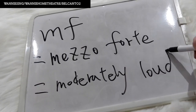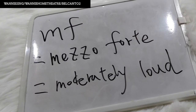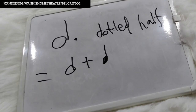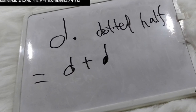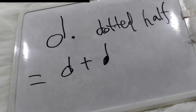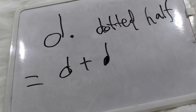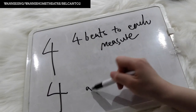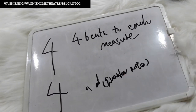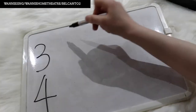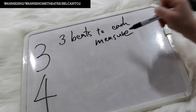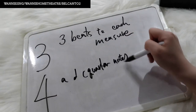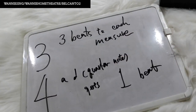The new music dynamic we have learned today is MF. MF stands for Mezzo Forte. It means moderately loud. The new note value is dotted half. Dotted half equals one half note plus one quarter note. Dotted half gets three beats in a four-four time signature. Four-four time signature: the number four on the top means four beats to each measure; the bottom four means a quarter note gets one beat. Three-four time signature means there are three beats to each measure, or three beats in a bar. The number four at the bottom means a quarter note gets one beat.